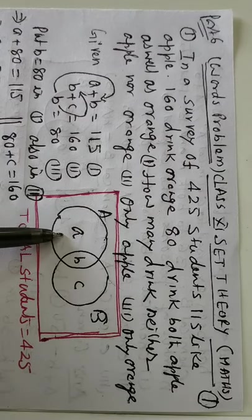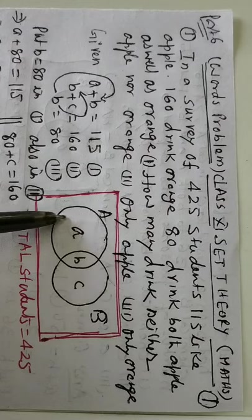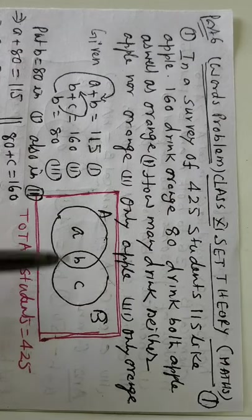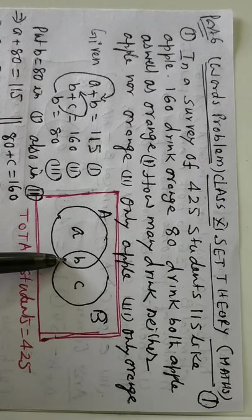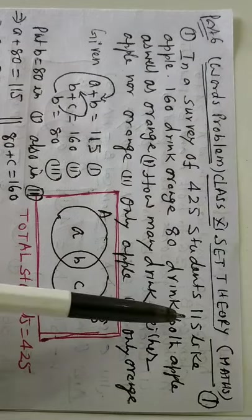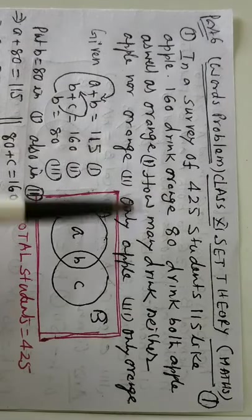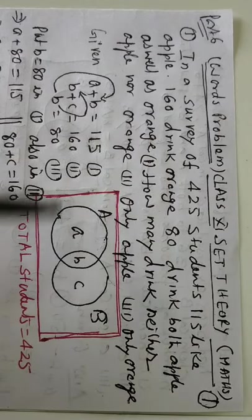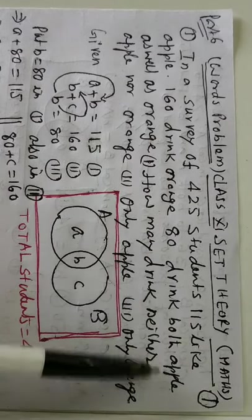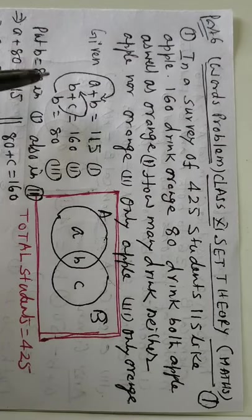Let us see the figure. Here, A represents the people who are liking apple, B represents the people who are liking orange. Write A, B, C, three variables have been used. Apple, 115 apple means A plus B is 115. 160 orange means B plus C is 160. And 80 drink both, B is both.